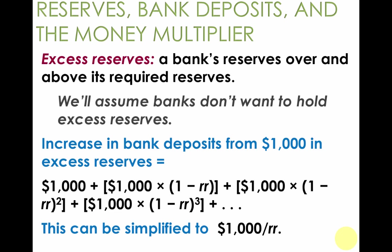If we add up all the different increases in money supply through different deposits created by new loans through all the banks after Silas' initial $1,000 deposit, we find that $10,000 is created — or $1,000 over the required reserve ratio.